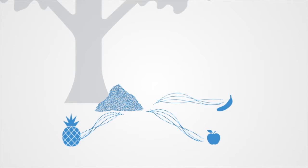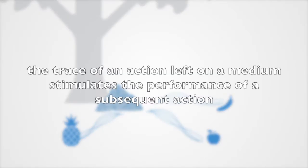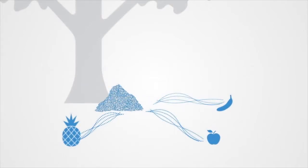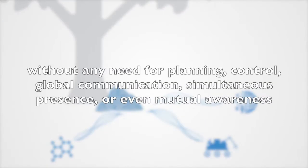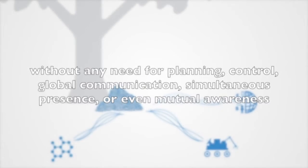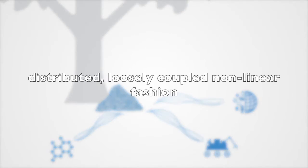This method of distributed coordination is called stigmergy and is often present in self-organizing emergent processes. Stigmergy refers to an indirect mediated mechanism of coordination between actions, in which the trace of an action left on a medium stimulates the performance of a subsequent action. The concept of stigmergy has been used to analyze self-organizing activities in an ever-widening range of domains — from social insects to chemical reactions, to robotics, bodily coordination, web communications, and human society. Such stigmergy enables complex coordinated activity without any need for planning, control, global communication, simultaneous presence, or even mutual awareness. It happens in a distributed, loosely coupled, nonlinear fashion.